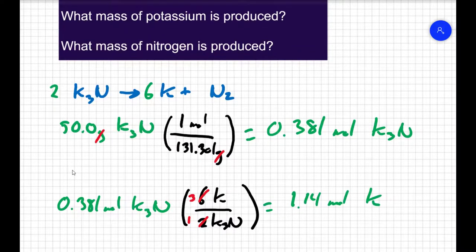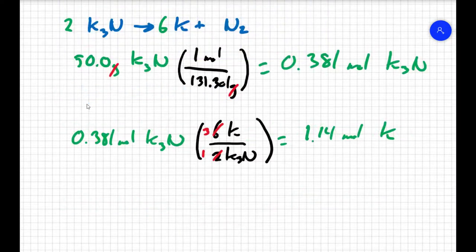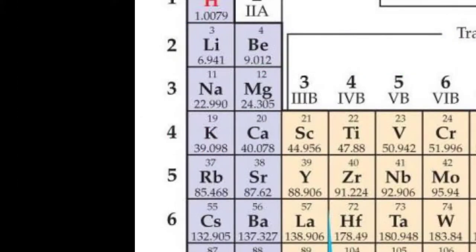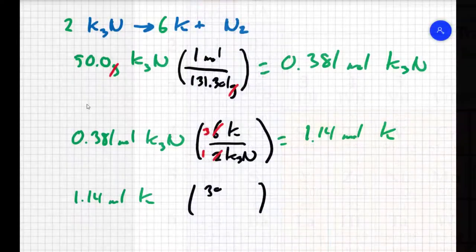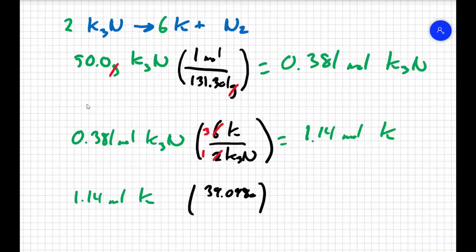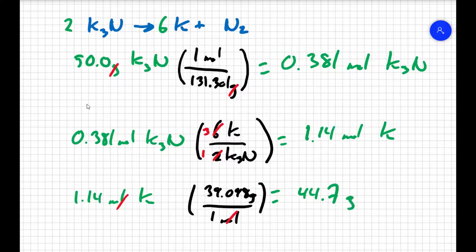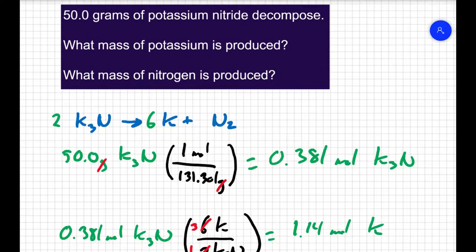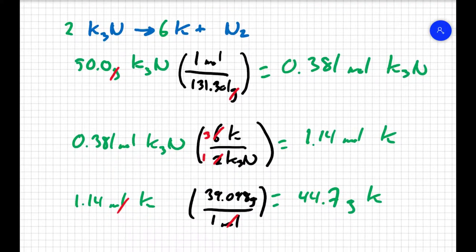But the question isn't asking about moles of potassium, it's asking for the mass of potassium. I have 1.14 moles of potassium. Going back to my periodic table, the molar mass of potassium is 39.098 grams per mole. Moles cancel out, giving 44.7 grams of potassium. So when we decompose 50 grams of potassium nitride, we make 44.7 grams of potassium.